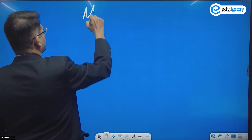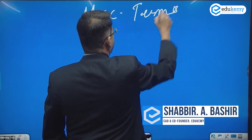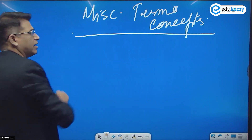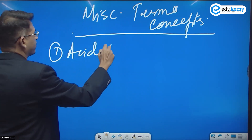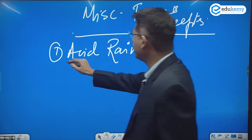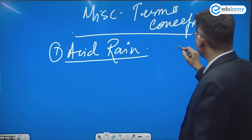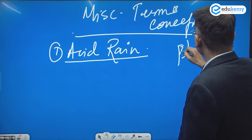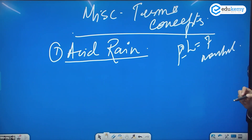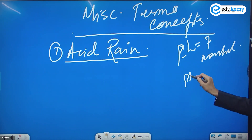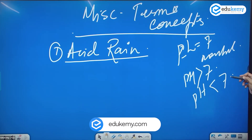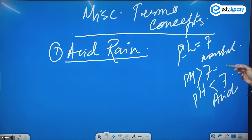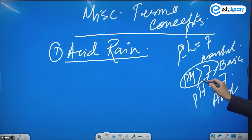Let's talk about miscellaneous terms and concepts. The first one is acid rain. Normal rain has a pH value — pH 7 is considered to be neutral. If the pH value is more than 7, it is alkaline, and if the pH value is less than 7, we call that acidic. So pH more than 7 is alkaline or basic, and pH less than 7 is acidic.